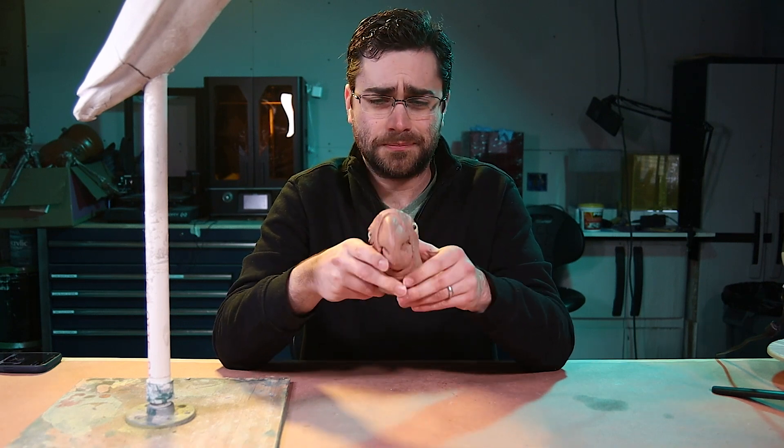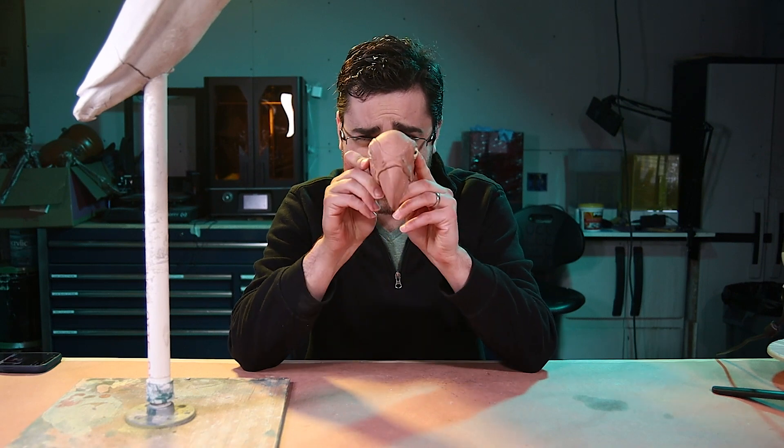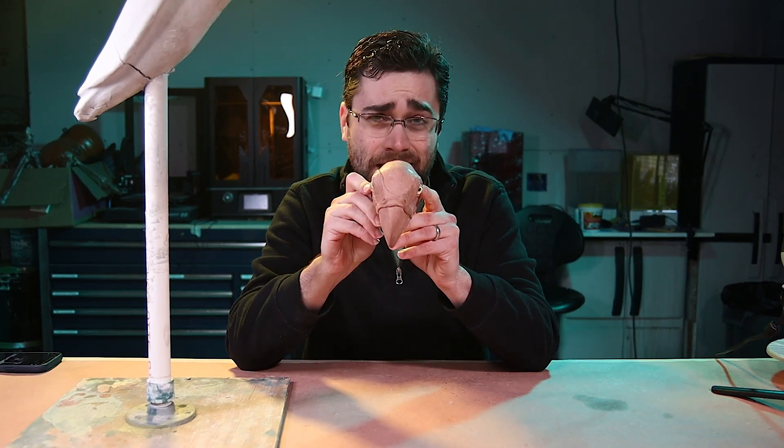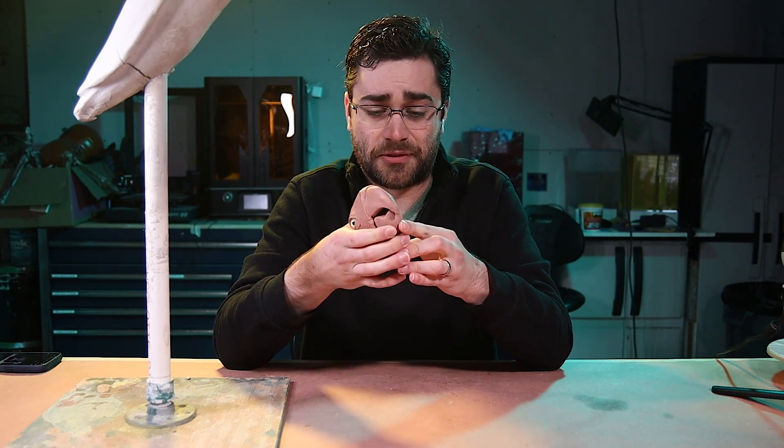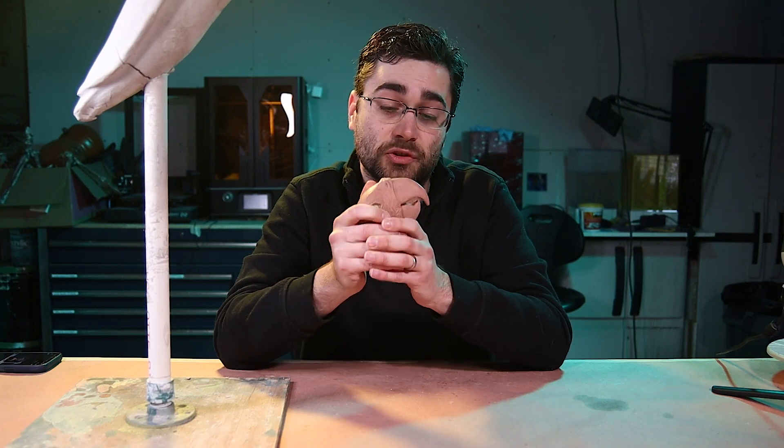And so, where I started sculpting this by hand, you can kind of see looking down the top that it's not perfectly symmetrical. If it was just a sculpture, that would be fine. But I think that because it's going to be mechanical, and I want all of these joints to move really smoothly, it's really going to help out to make both sides exactly the same.